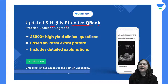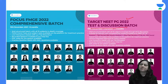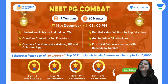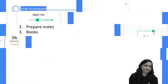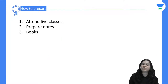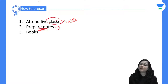There are updated and highly effective questions. You can focus on FMGE 2022 with a comprehensive batch or target NEETPG 2022 with a test and discussion batch. There is also a NEETPG comeback with 45 questions in 60 minutes and a scholar program offering additional discounts. To prepare for physiology, you can attend live classes, make notes while attending, and refer to printed notes or books available in the market.